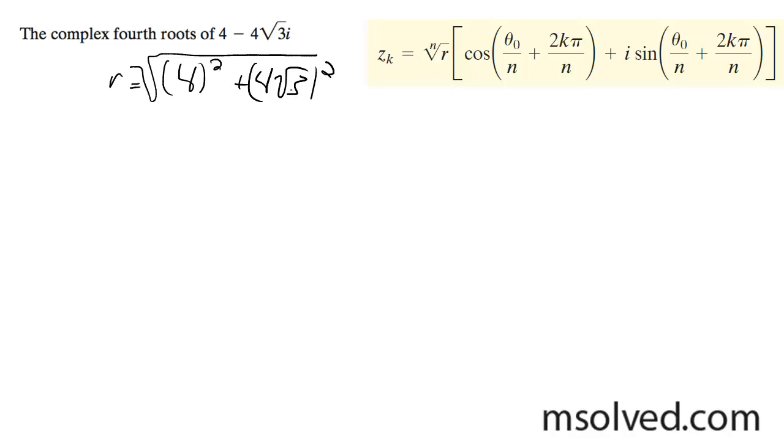So it's 16 times 3, which is 48. 16 plus 48 equals 64. The square root of that is 8.